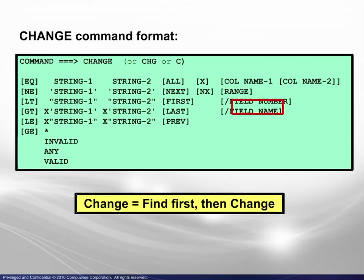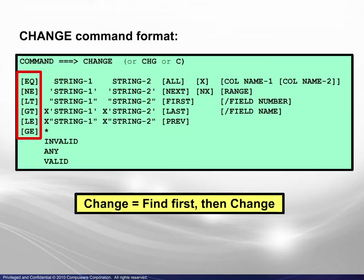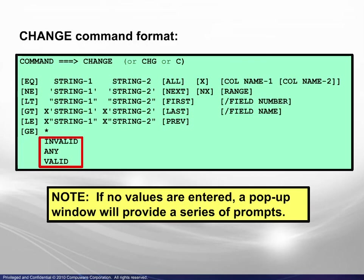With the record layout allowed by FileAid, you can limit the change to a specific field either by field name or by field number. The two remaining options really give the FileAid editor tremendous power. First of all, an operator may be specified. So, for example, instead of changing 3 to 5, you can change values less than 3 to 5. Instead of changing W to R, you can change values greater than W to R. Also, you can use the keywords invalid, valid, and any for special cases. With so many options to consider, there is a change wizard of sorts — simply enter the change command with no operands and a pop-up window will provide a series of prompts.